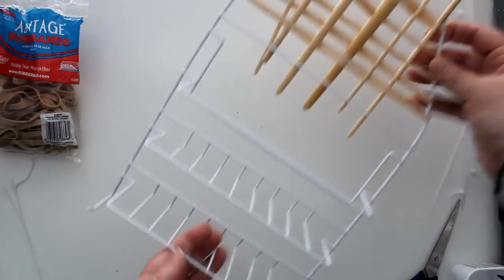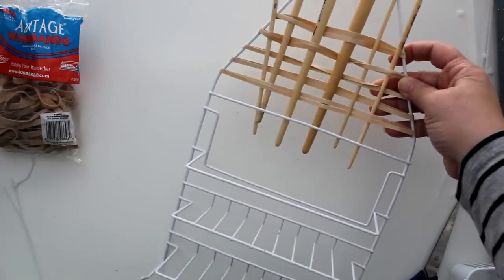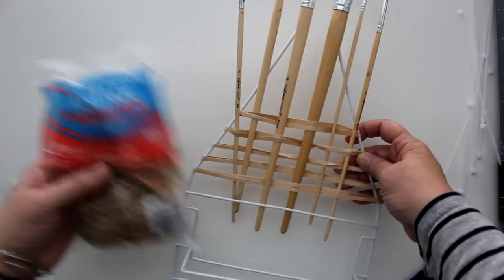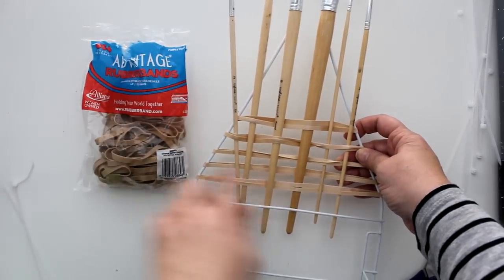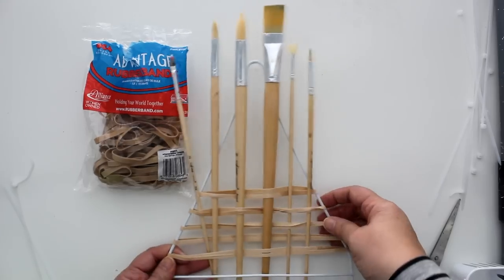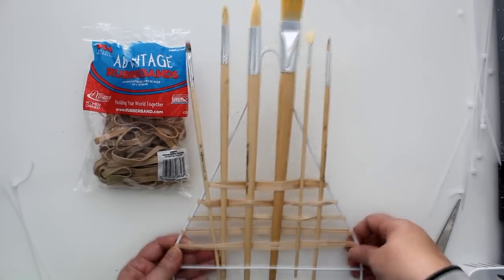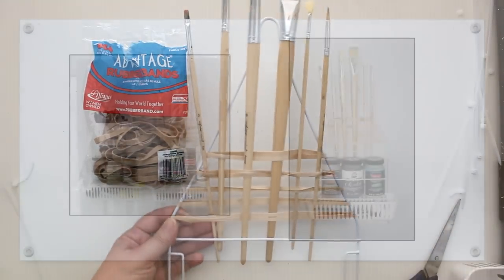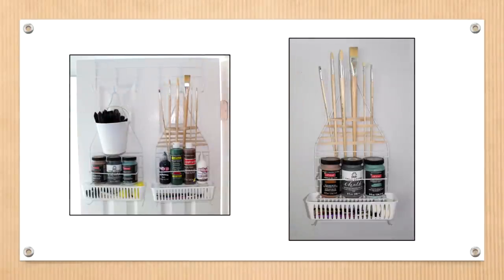Another option for a paint caddy would be to take some of these large rubber bands and place them across the top of the shower caddy to create a holder for my long paint brush. Then use the lower shelves again for paint storage. And then here you can see that the caddies can be hung on the back of a door on one of the Dollar Tree over the door caddies or directly to the wall.